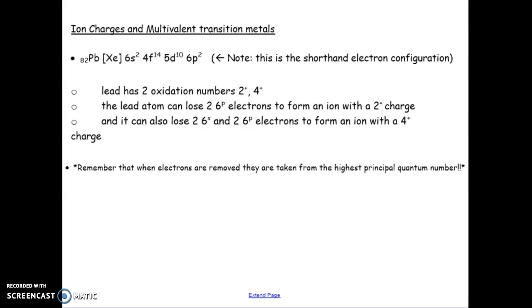So, let's look at if you are writing out the shorthand configuration here. This is just showing an example of lead. We've already talked about this. But remember that the shorthand is always the noble gas of the period before your element. And then it includes the extra electrons. So, the point of this is I want to talk about ion charges and just remind you of removing electrons and what happens.